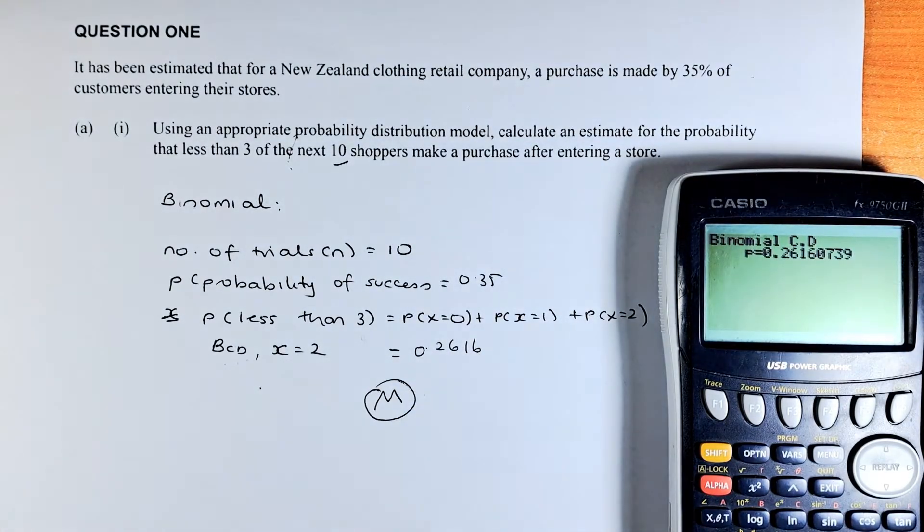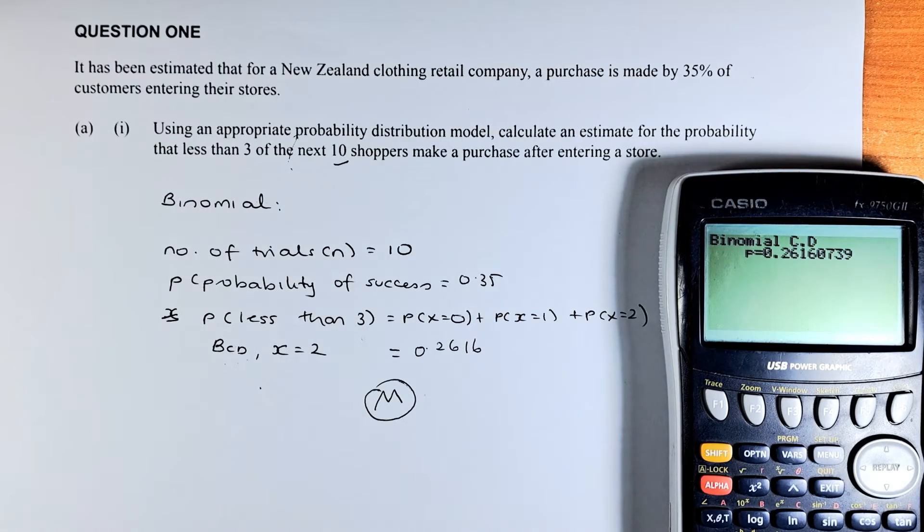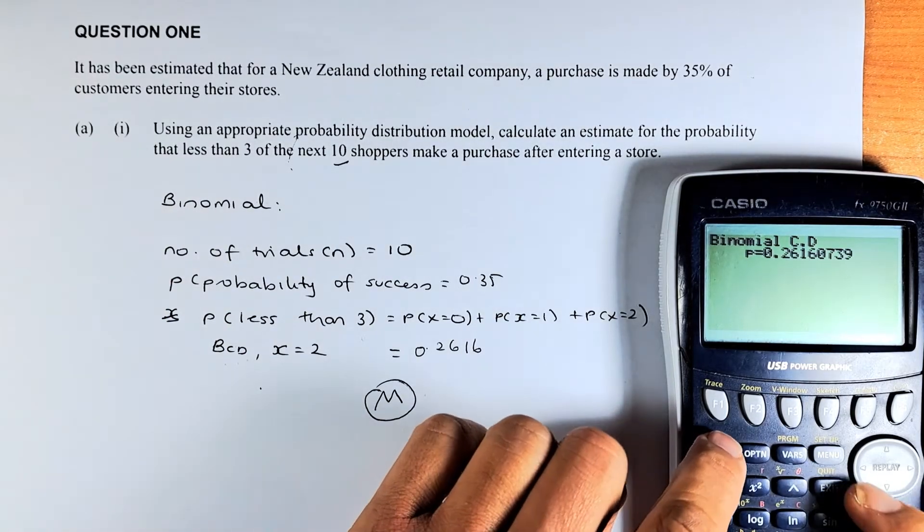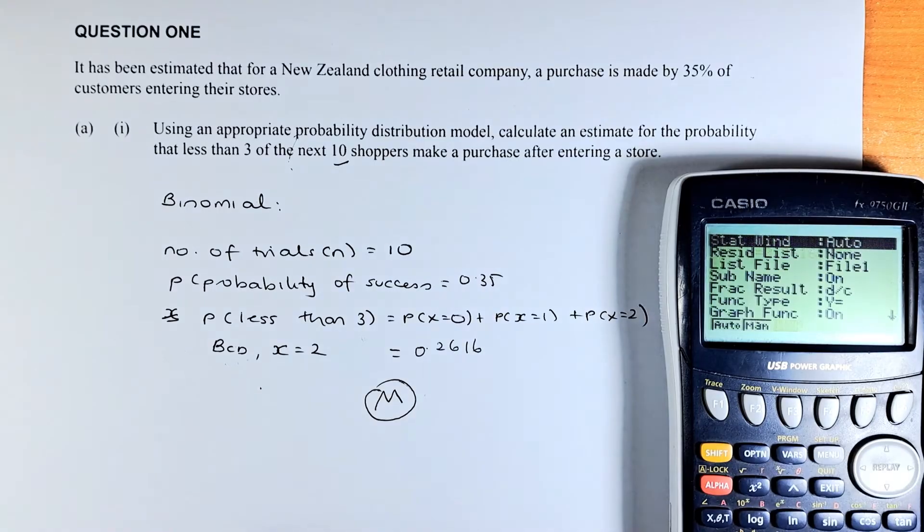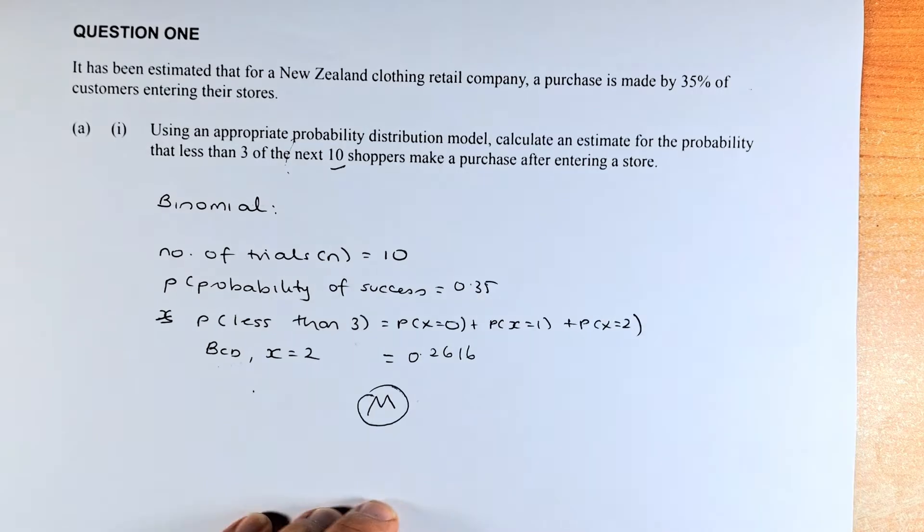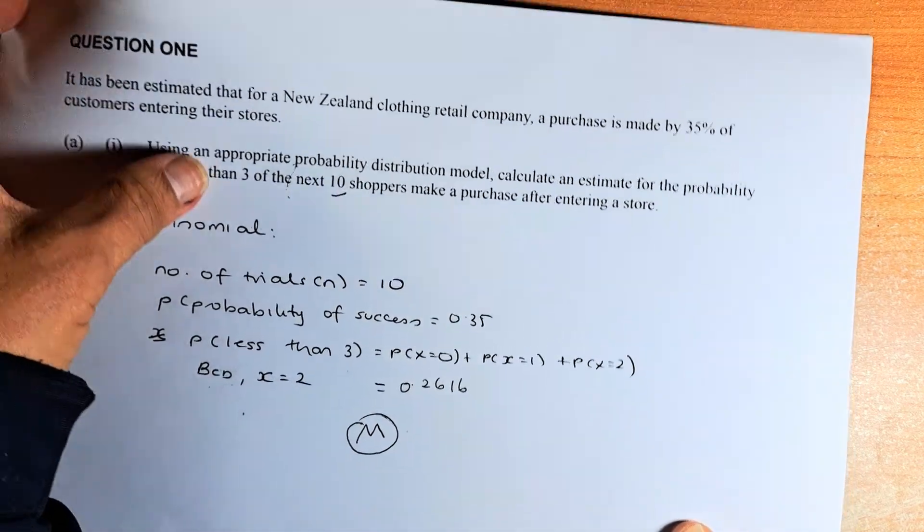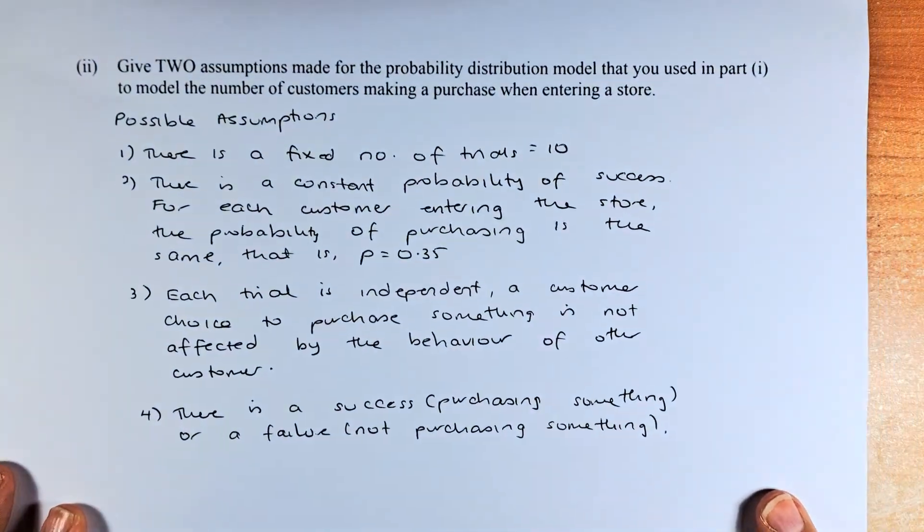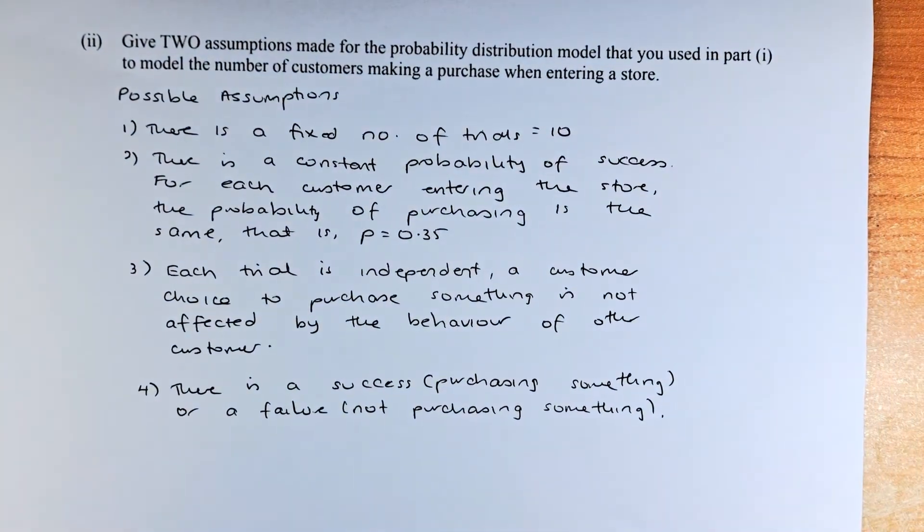And we shall proceed to part 2 of the question. We do not need the calculator for the moment. So we are going to delete them, just go out of it. And then we are going to do part 2. Part 2 doesn't need a calculator. So we are just going to read the question again.